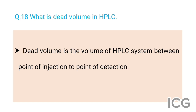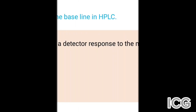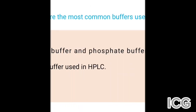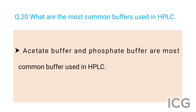The next question is: what is the baseline in HPLC? The answer is the baseline is the detector response to the mobile phase. The last question is: what are the most common buffers used in HPLC? The answer is acetate buffer and phosphate buffer are the most common buffers used in HPLC.